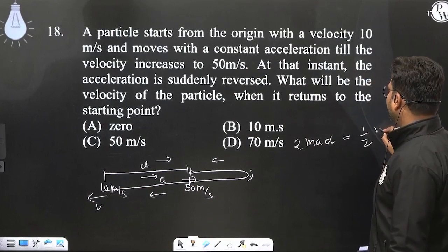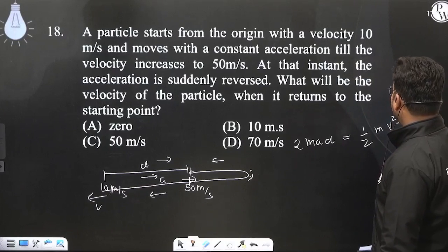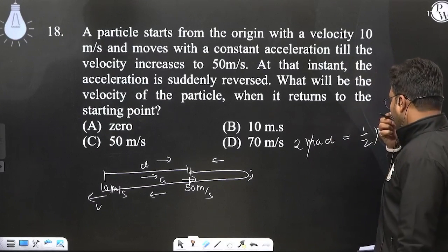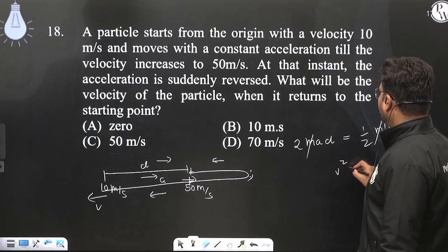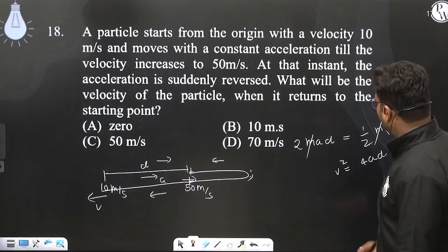Half M V square minus u square. This is the same. M canceled. Now we have some kind of balance. V square equals to 4AD. V square equals to 4AD.